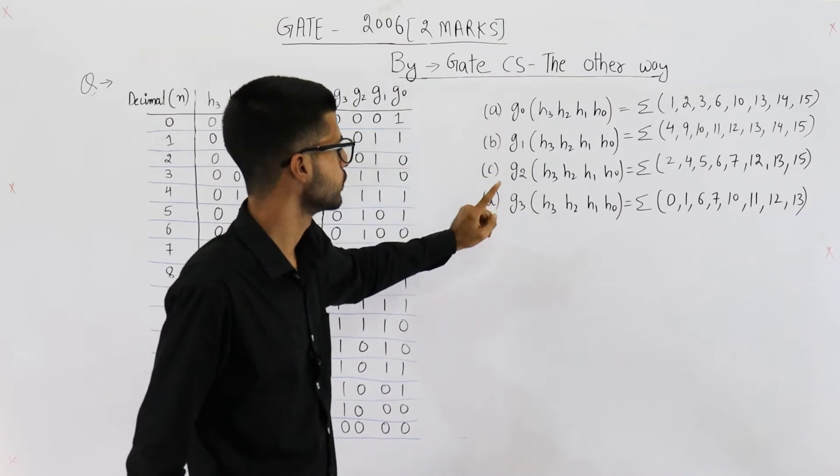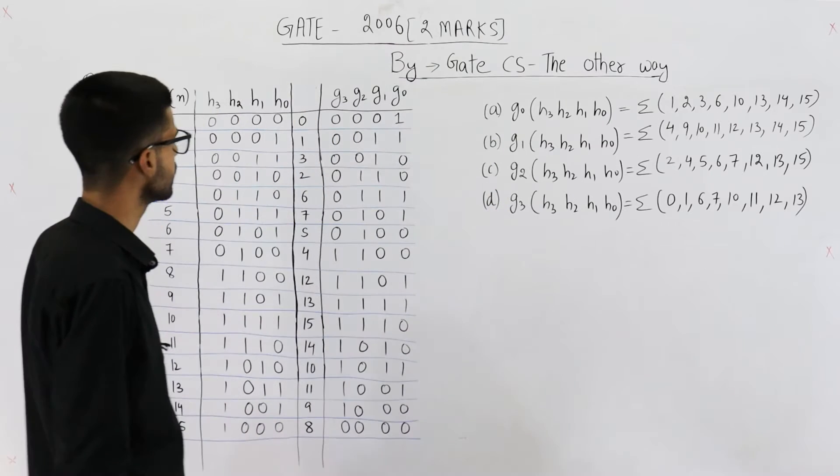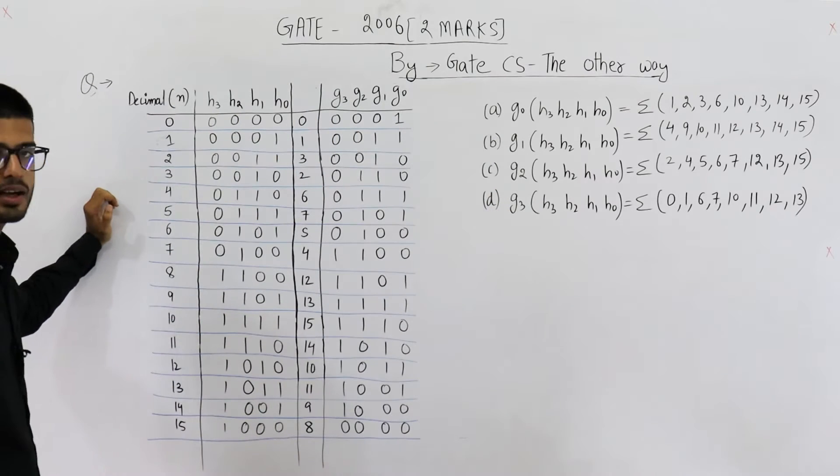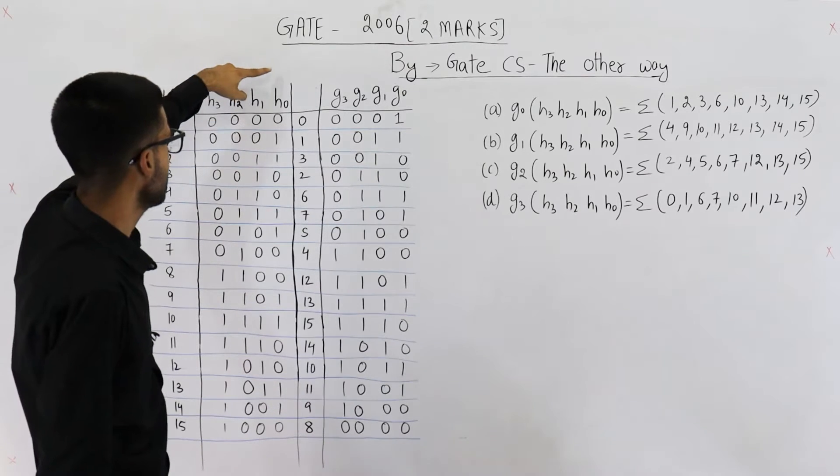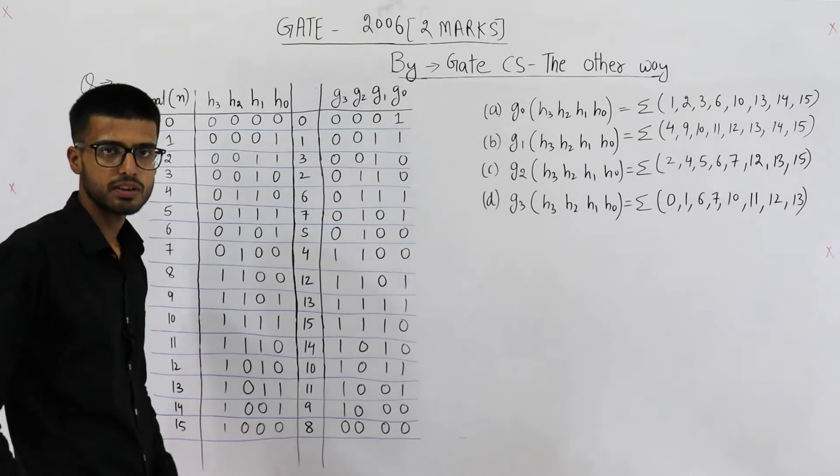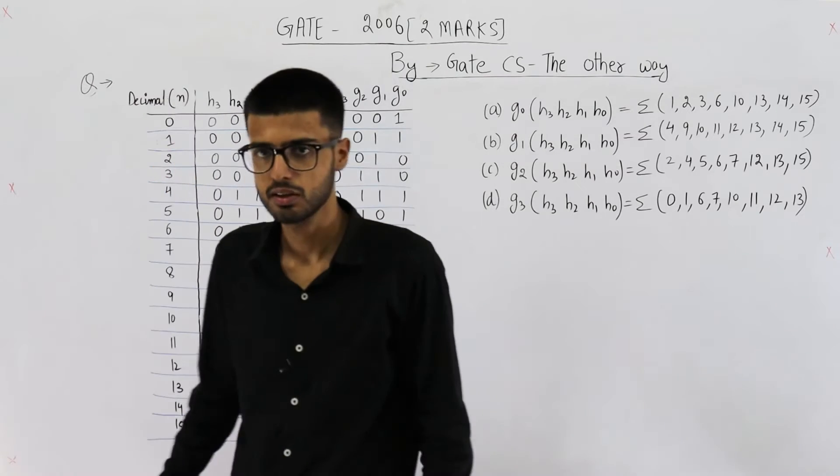They are g0, g1, g2 and g3. Okay. First of all, let's analyze how did I get this table. First thing is they are saying h3, h2, h1, h0 is a 4-bit gray code for a number n.